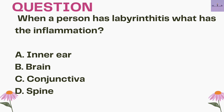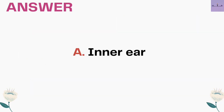Next question: when a person has labyrinthitis, what has the inflammation? A. Inner ear. B. Brain. C. Conjunctiva. D. Spine. Labyrinth is another name for the inner ear, so labyrinthitis is the inflammation of the inner ear. The answer is option A, inner ear.